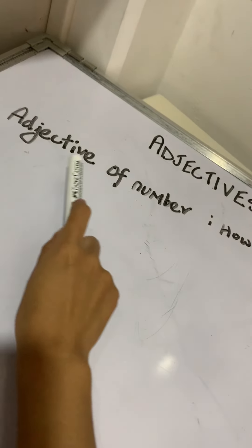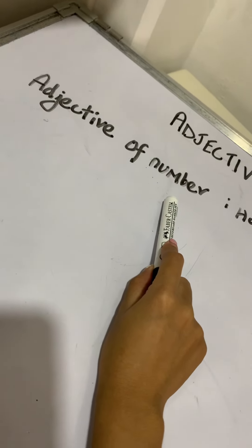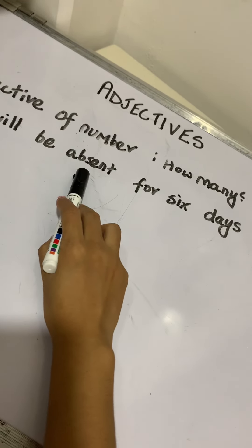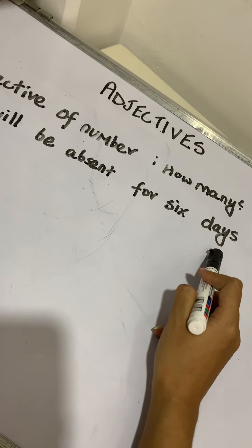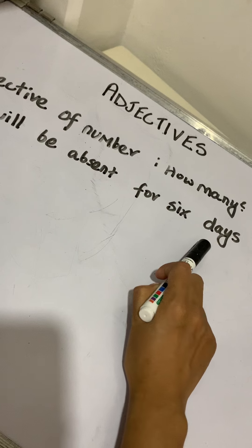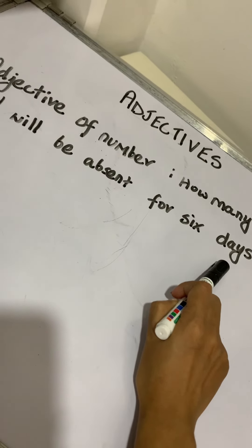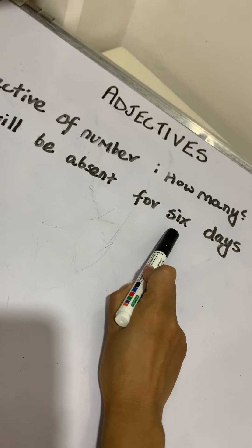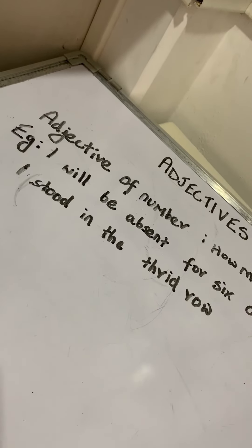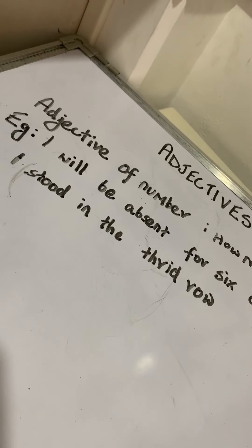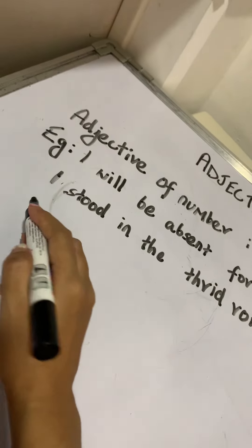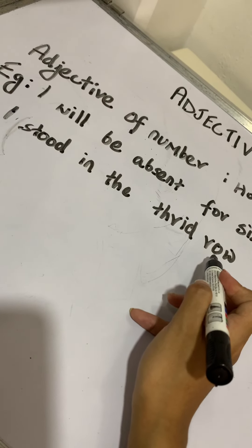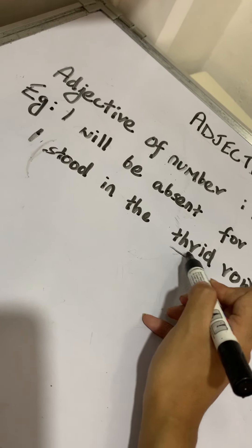Next, we have adjective of number. An adjective of number answers the question "how many?" For example: I will be absent for six days. The noun is days. How many days? Six. So, six is the adjective because it tells us more about a noun. All cardinal numbers and ordinal numbers are also adjectives. For example: I stood in the third row — third tells us more about the noun row, so third is the adjective.